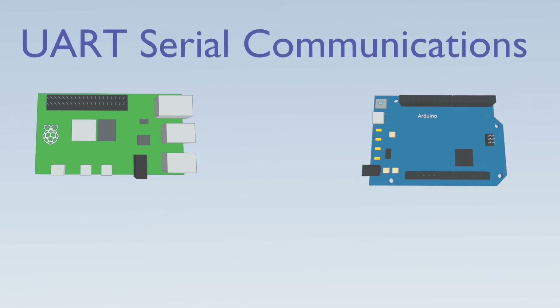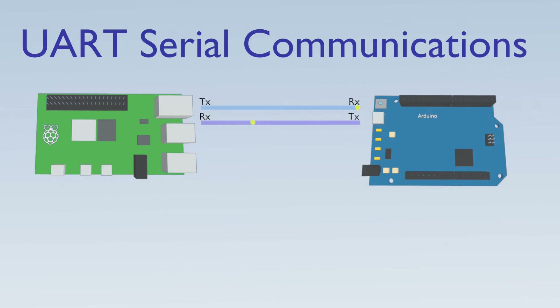Excluding the ground connection, there are two connections between the Raspberry Pi and the Arduino: the transmit from the Raspberry Pi goes to the receive of the Arduino, and the transmit from the Arduino goes to the receive of the Raspberry Pi. If the Arduino wants to send information back, it takes its turn to send data on its transmit port. This happens asynchronously — no external clock is needed — and is normally half duplex, meaning one side takes turns transmitting. In reality there will also be flow control signals between the devices.